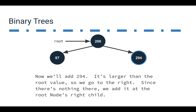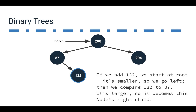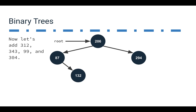If we add 294, it's larger than 206, so we go to the right. Since there's nothing there, we add it as the root node's right child. Now if we add 132, we start at the root — it's smaller, so we go left. Then we compare it to 87, and it's larger, so it becomes 87's right child. We kind of have to keep this pattern going until we find a free space.